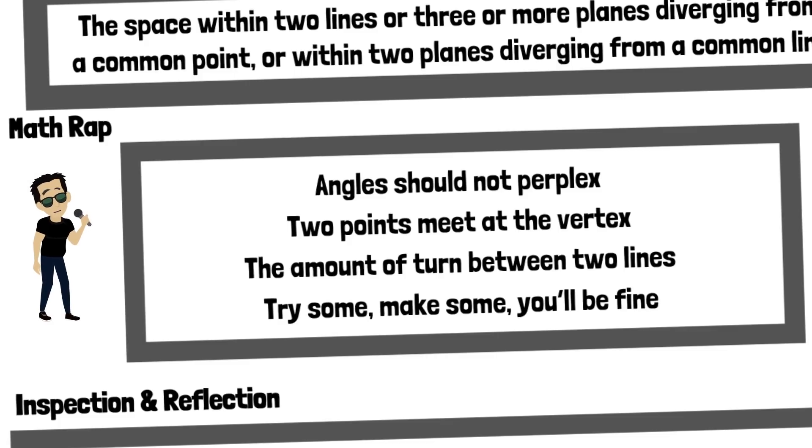Angles should not perplex. Two points meet at the vertex. The amount of turn between two lines. Try some, make some, you'll be fine. Angles should not perplex. Two points meet at the vertex. The amount of turn between two lines. Try some, make some, you'll be fine.